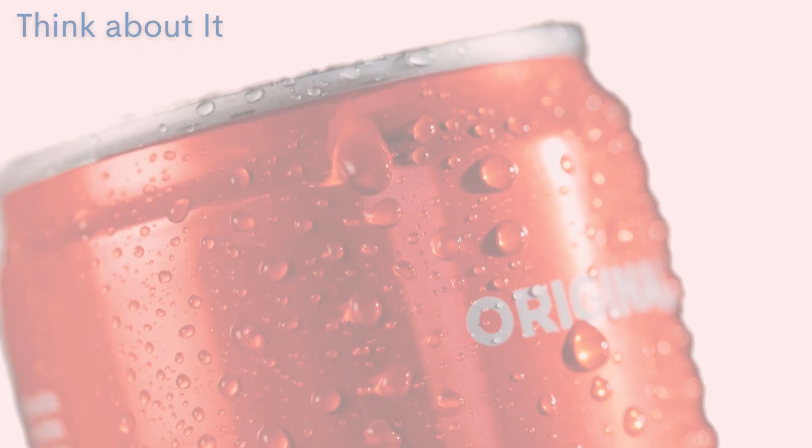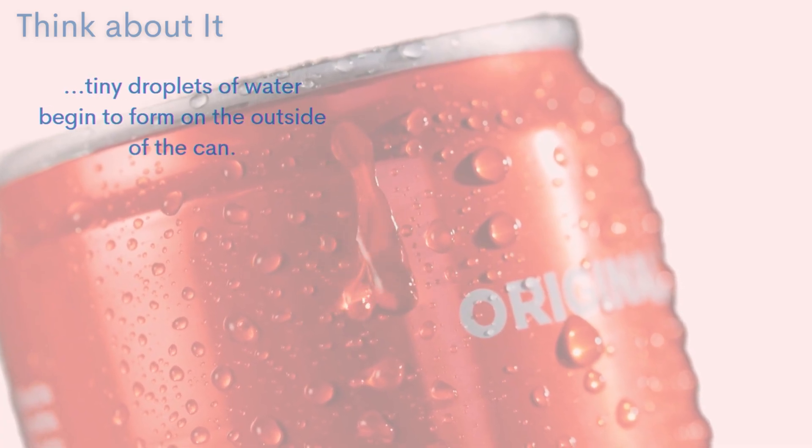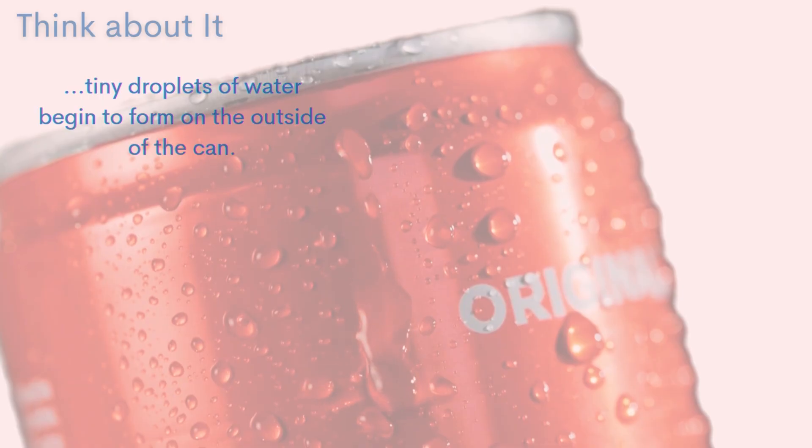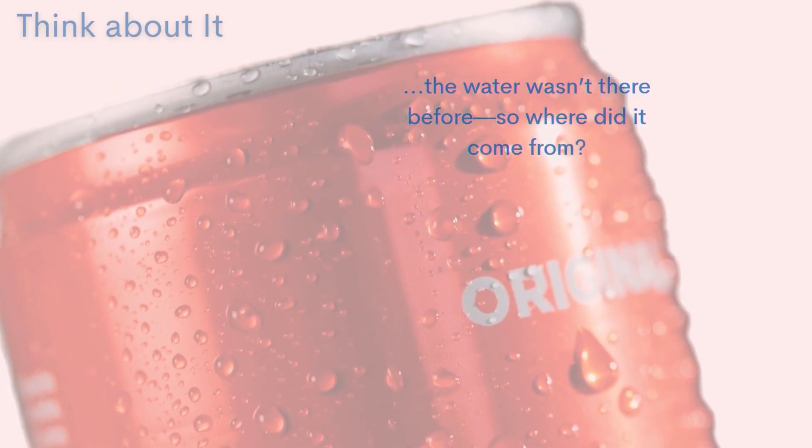On a hot summer day, you grab a cold can of soda from the fridge and set it on the table. Before long, tiny droplets of water begin to form on the outside of the can. The water wasn't there before, so where did it come from?